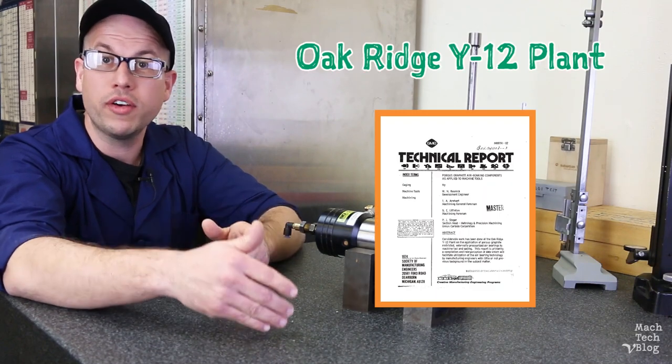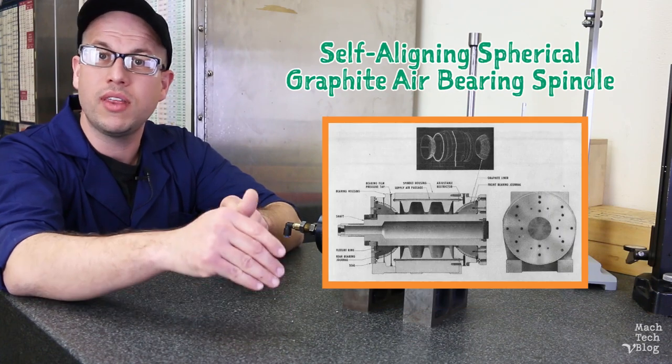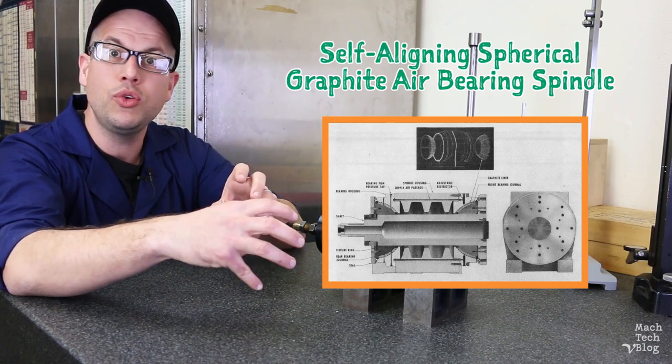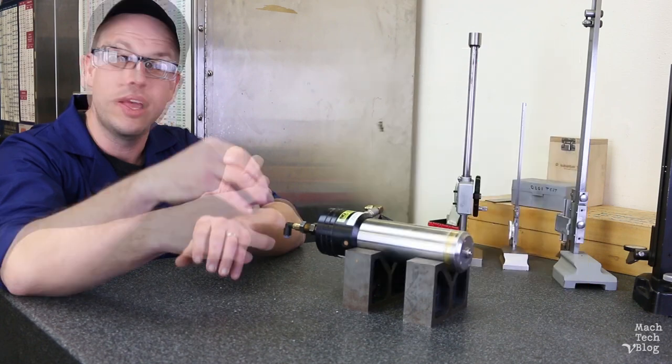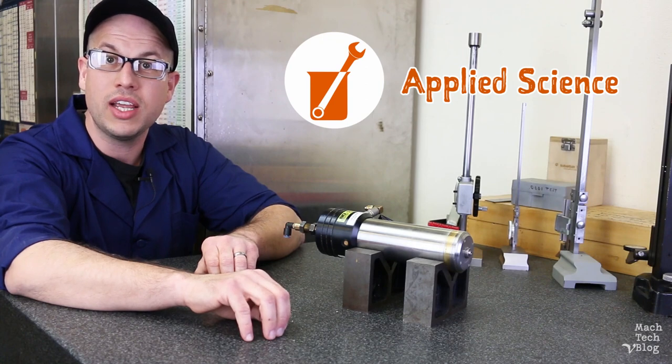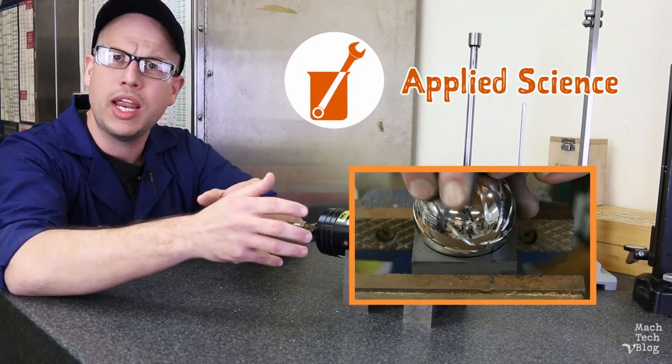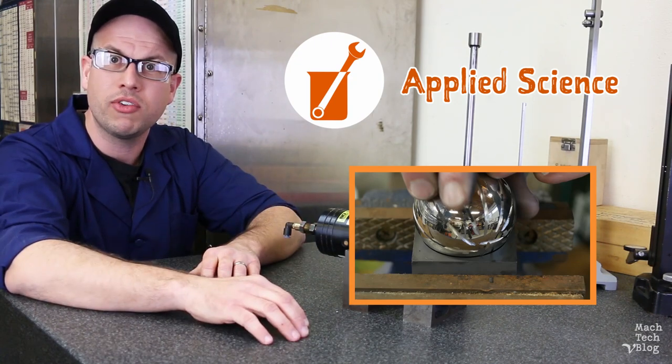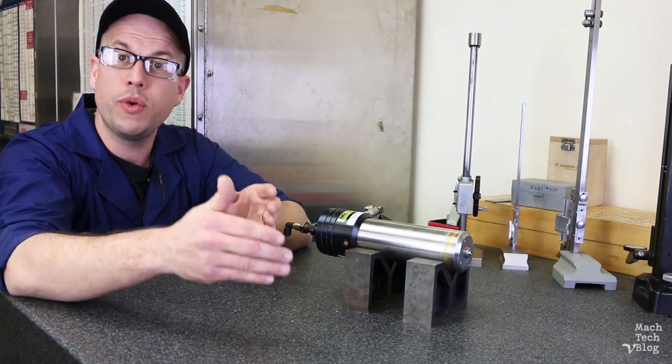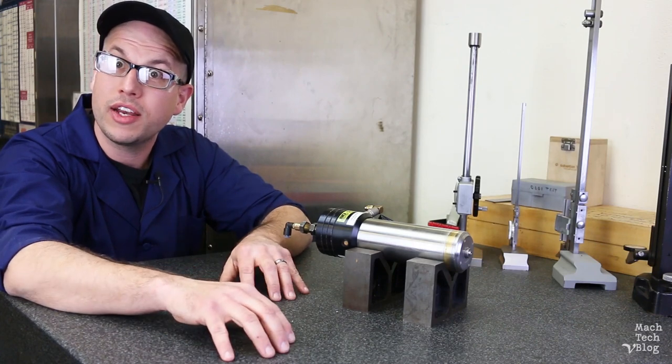Now, recently I came across a wonderful technical article authored by the Oak Ridge Y-12 plant in 1974, which details the design and manufacture of a self-aligning machine tool spindle constructed from two opposed spherical graphite air bearings. Serendipitously, Ben Krasnow of Applied Science also recently came out with a video about DIY graphite air bearings, in which he demonstrates a simple and effective way to form or shape graphite for non-planar bearing geometries using the bearing elements themselves. A spindle based on the Oak Ridge design, which incorporates Ben Krasnow's innovative technique, definitely seems doable, and making one is something I'd like to attempt.